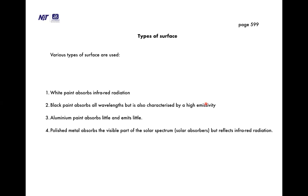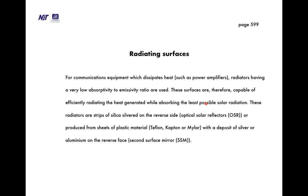The values of absorptivity α and emissivity ε vary between 0 and unity depending on the material. Various surface types can be used: white paint absorbs infrared radiation; black paint absorbs all wavelengths but has high emissivity; aluminium paint absorbs little and emits little; polished metal absorbs the visible part of the solar spectrum (solar absorber) but reflects infrared radiation. The choice of material depends on specific requirements.